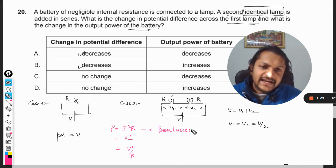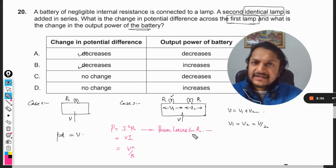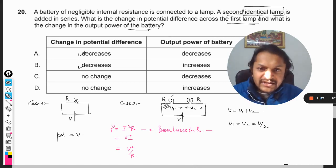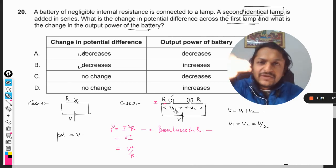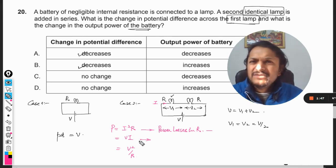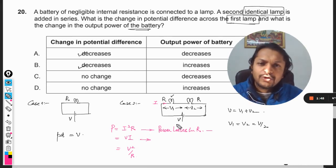Whenever we are concerned with the power losses in a particular resistance, you are going to use the formula I square R. So just find the current I that is passing through the element and what is the resistance, then apply the formula I square R.